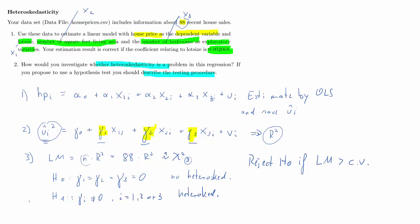Before implementing in R, recall the decision rule using p-values: we reject if the p-value is smaller than alpha. Since no specific alpha was given, we can set our own — let's say alpha equals one percent. Now let's go to R.